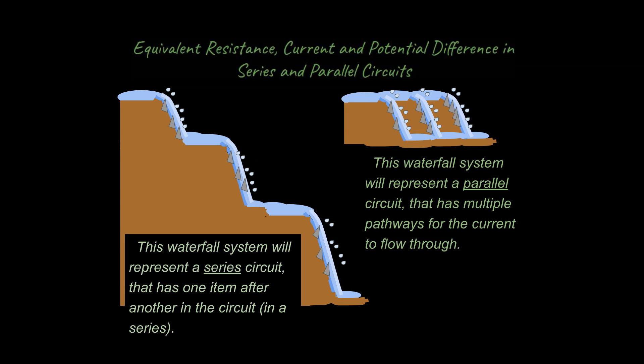The first analogy I want to introduce is a mountainside with different types of waterfall systems. On the left, you can see a mountainside with three different waterfalls in series — one right after another. This waterfall system represents a series circuit where the current flows down one right after another after another drop.